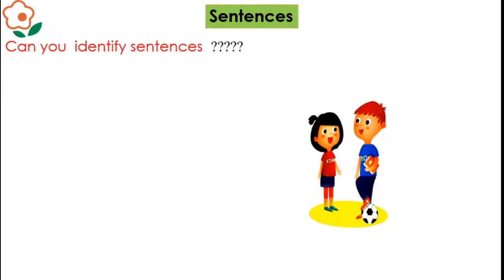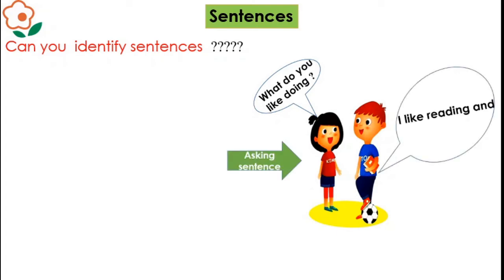Similarly, we have another picture where you can see Tom is holding a book and a ball. Kim is asking, what do you like doing? Tom replies, I like reading and playing football. What do you like doing is an asking sentence, and I like reading and playing football is a telling sentence. Tom is telling and Kim is asking.